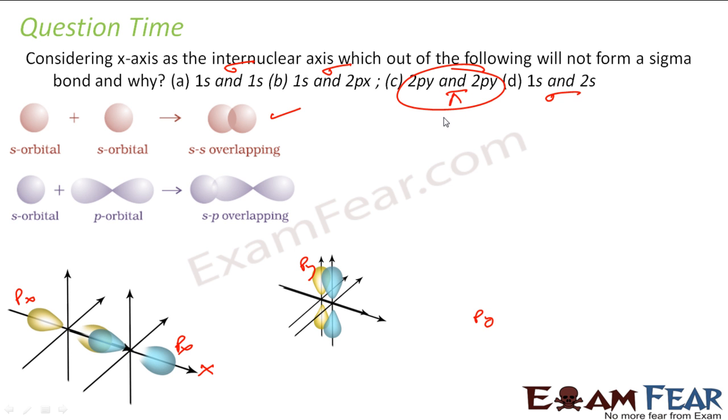So the question is which is not sigma? The third one is not sigma. Why? Because you can see that if x is my inter-nuclear axis, Py and Py forms a pi bond. Also Pz and Pz, because x is my inter-nuclear axis, Pz also forms a pi bond.